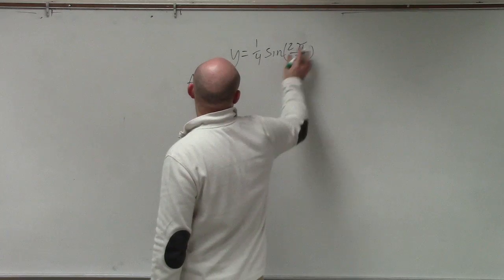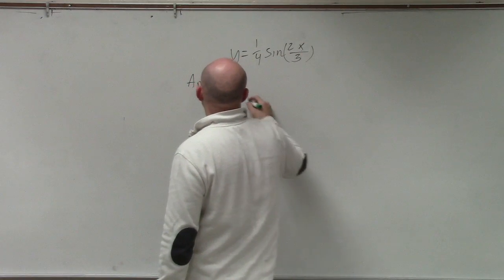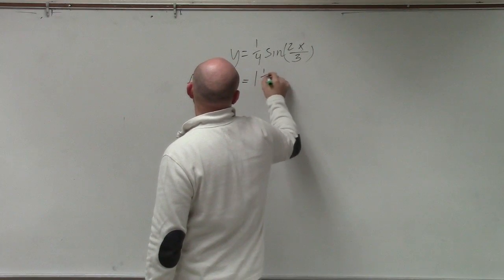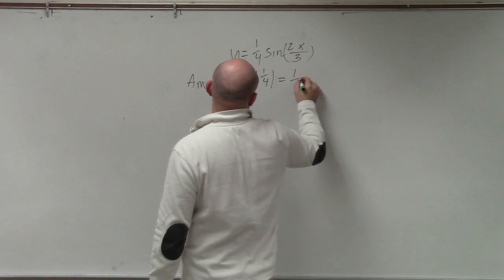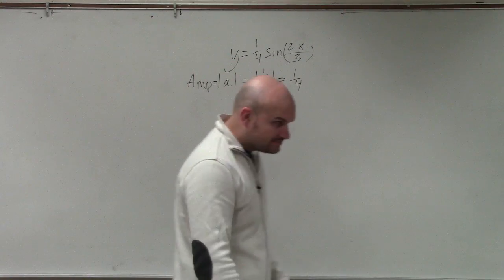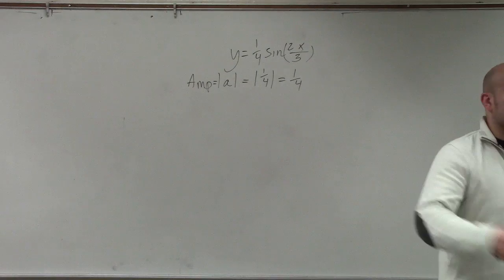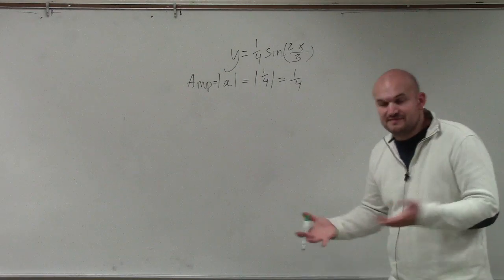It's also 2x, not 2x. Oh yes, you're right. Thank you. All right, so the amplitude is the absolute value of 1/4, which is just 1/4, right? Absolute value is always going to be positive. So if it's negative, it's going to be positive. If it's positive, it's going to be positive.